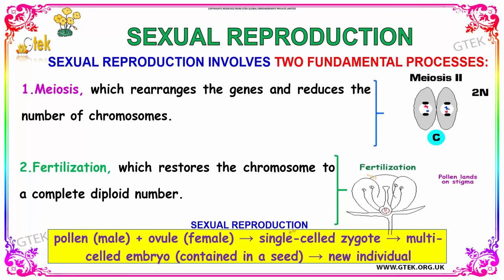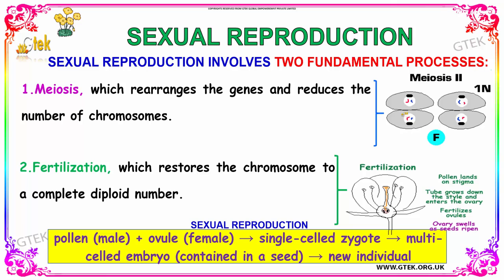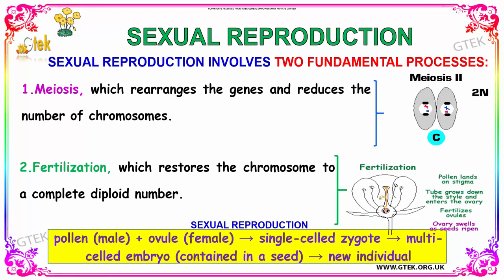Sexual Reproduction involves two fundamental processes: Meiosis and Fertilization. In Meiosis, it rearranges the genes and reduces the number of chromosomes, as you can see in the Meiosis process shown here. Fertilization restores the chromosomes to a complete diploid number. You can see the fertilization process here, showing the stigma, and a tube that grows down and enters the ovary.